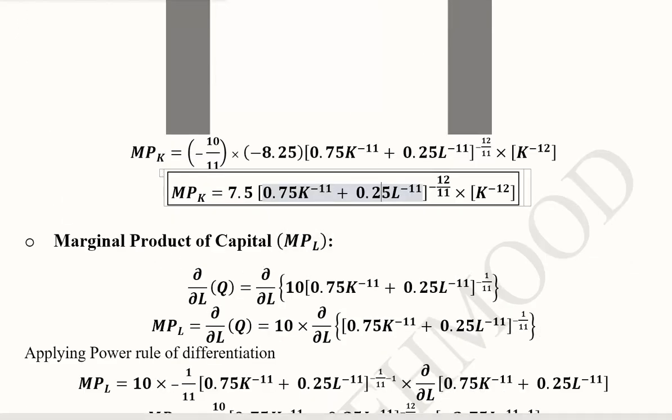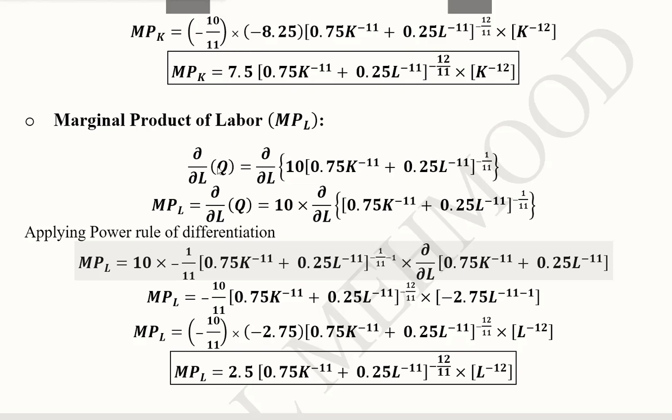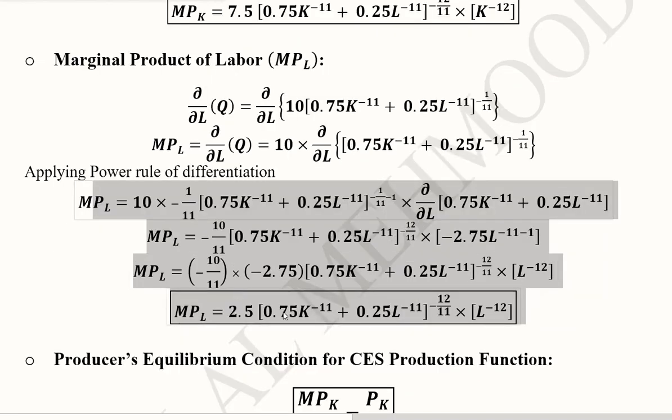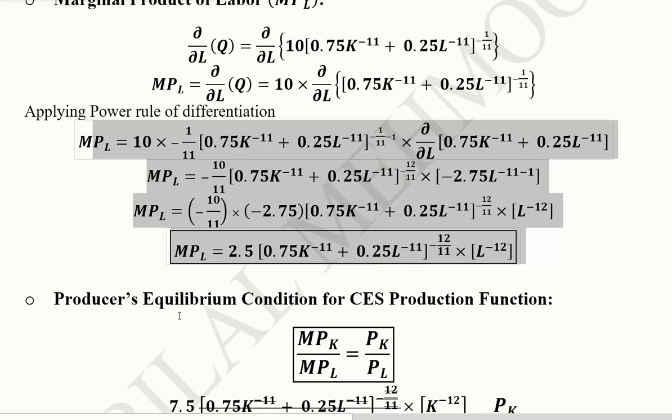Now we can also calculate the marginal product of labor. You can see that we have taken the derivative with respect to labor of the production function. Again, 10 comes outside which is the value gamma. It's actually a constant. We are going to do the same process of applying the power rule. You can pause the video and see it here as we have done above in case of MPK. The final answer will be equal to this.